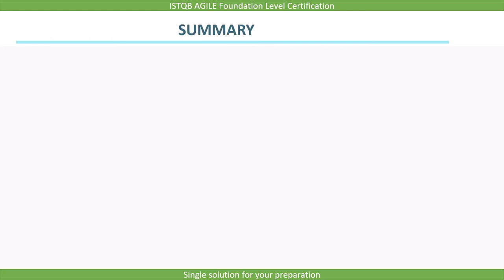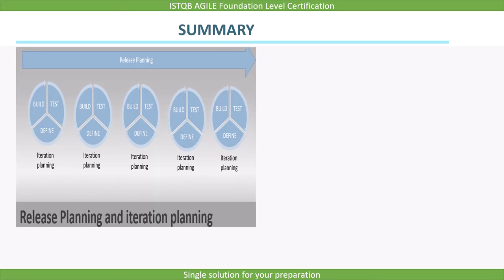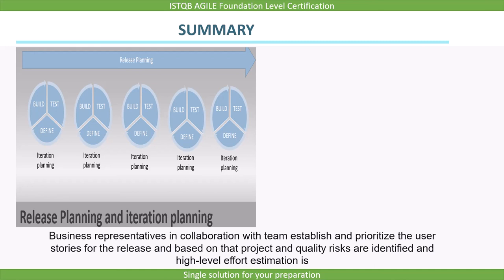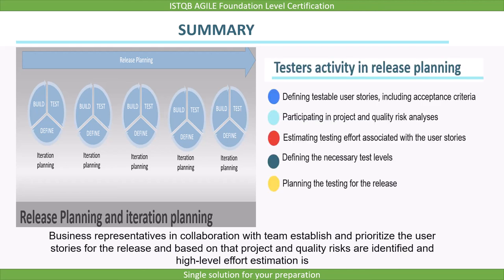Let's summarize the points we covered in this lecture. For agile life cycles, two kinds of planning occur: release planning and iteration planning. Release planning looks ahead to the release of a product, often a few months ahead of the start of a project, while iteration planning is done for a short period. Business representatives, in collaboration with the team, establish and prioritize user stories for the release, and based on that, project and quality risks are identified and high-level effort estimation is performed. Finally, we covered testers' contributions in release planning.